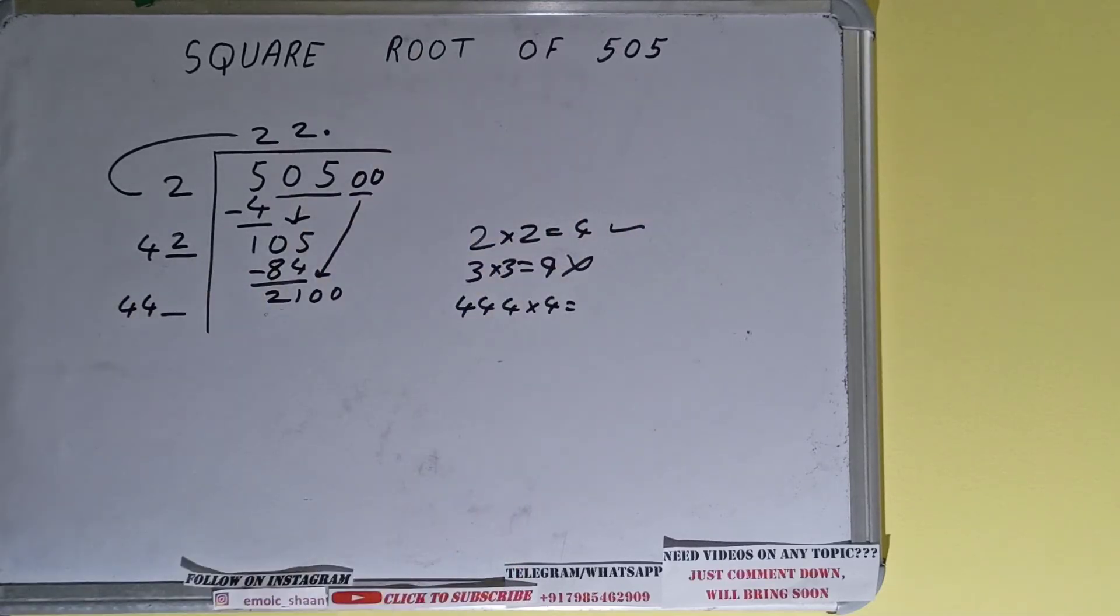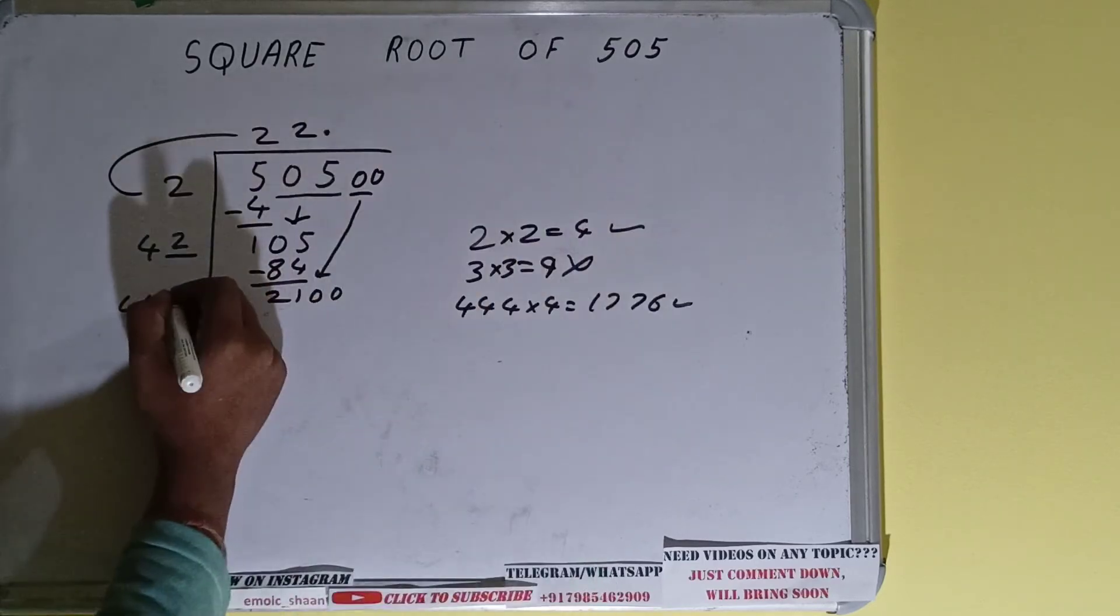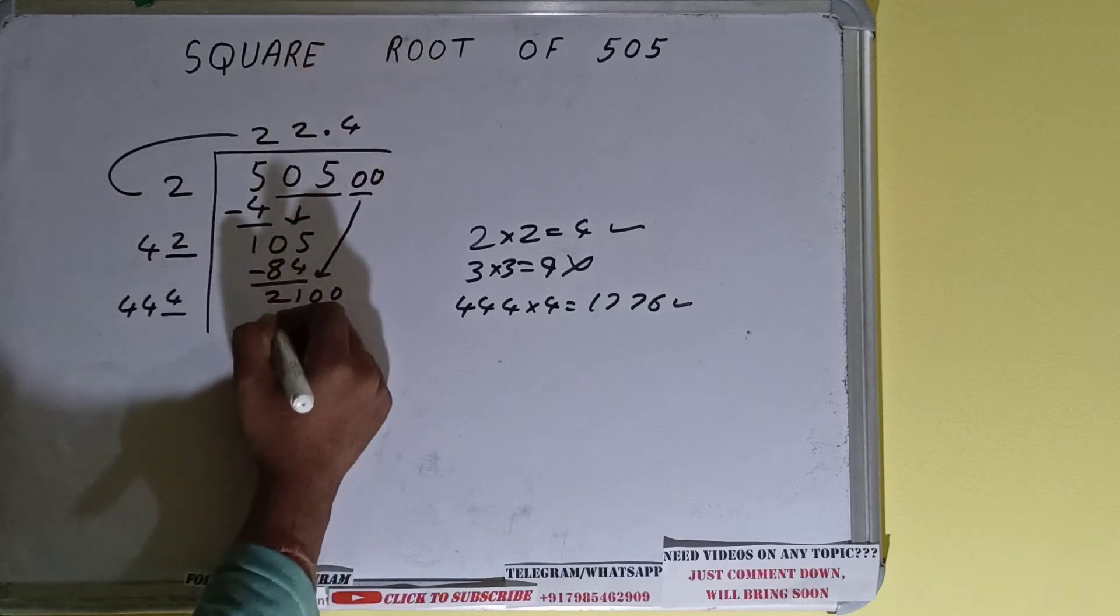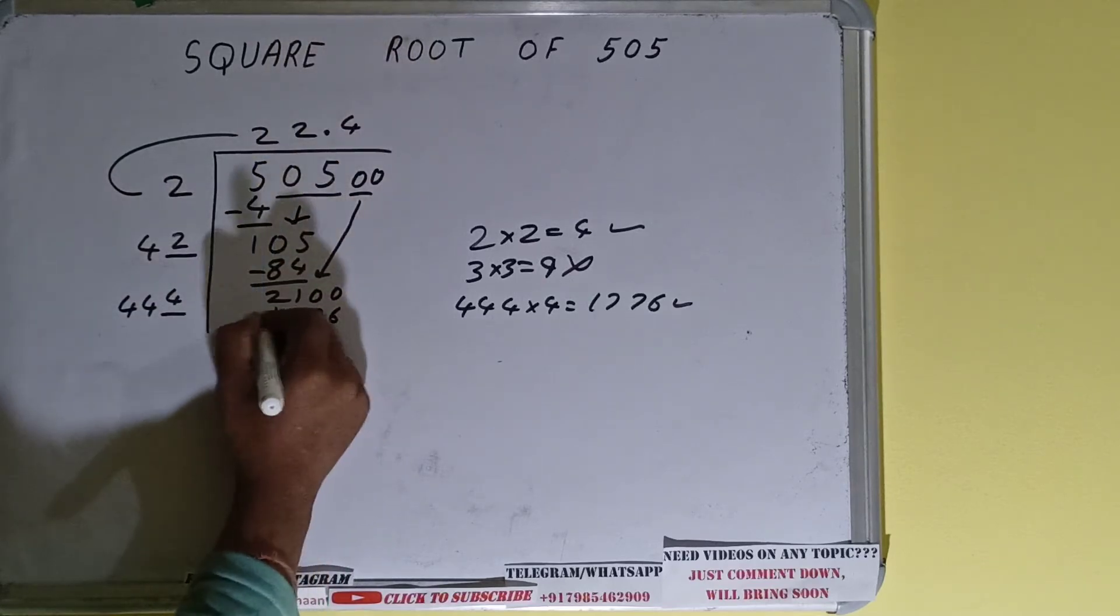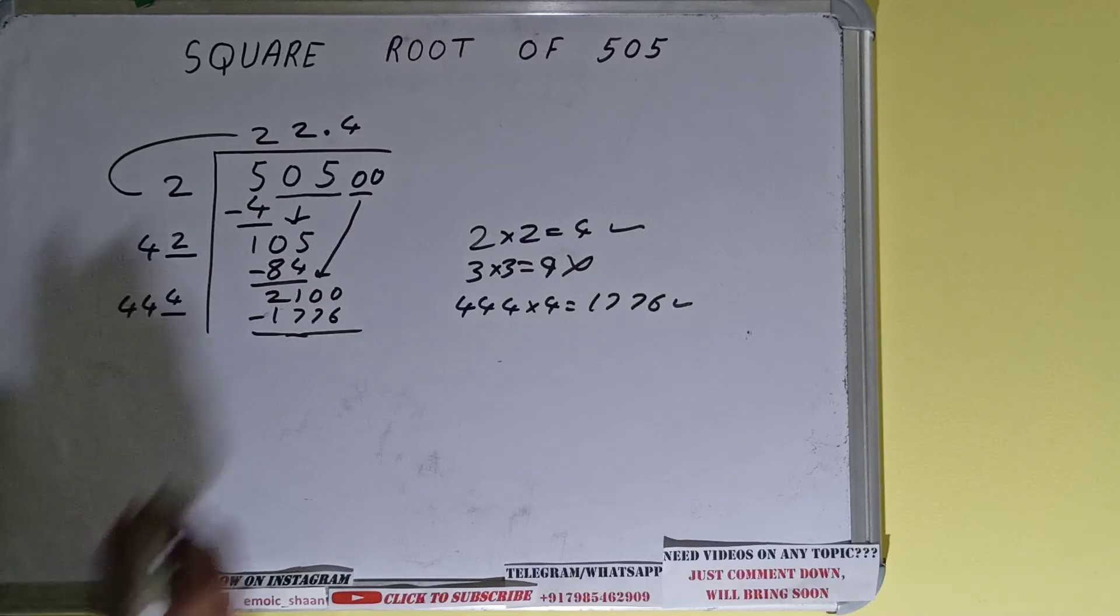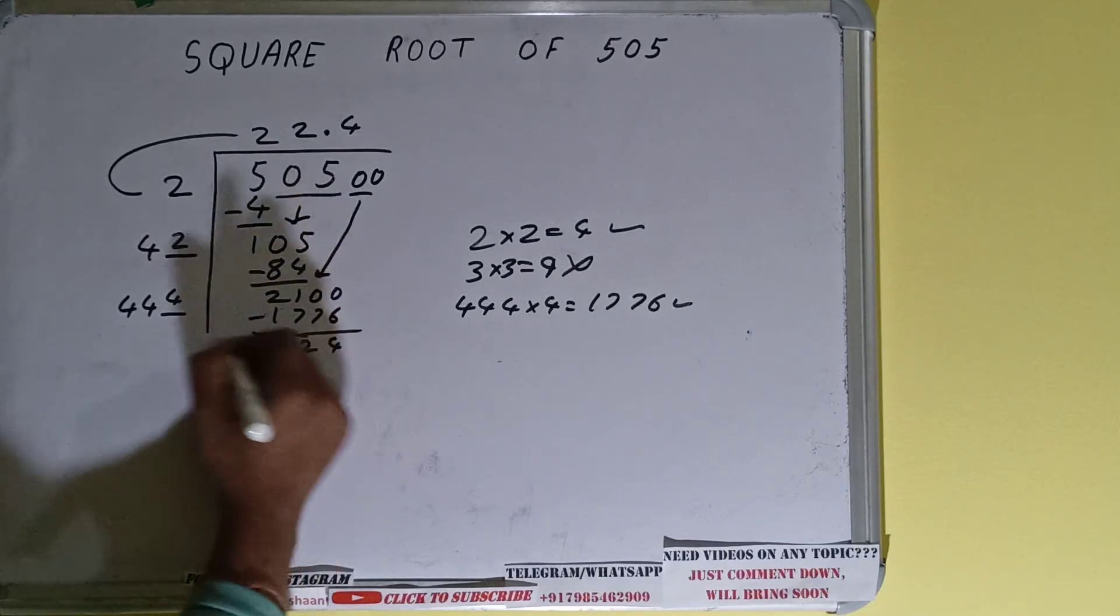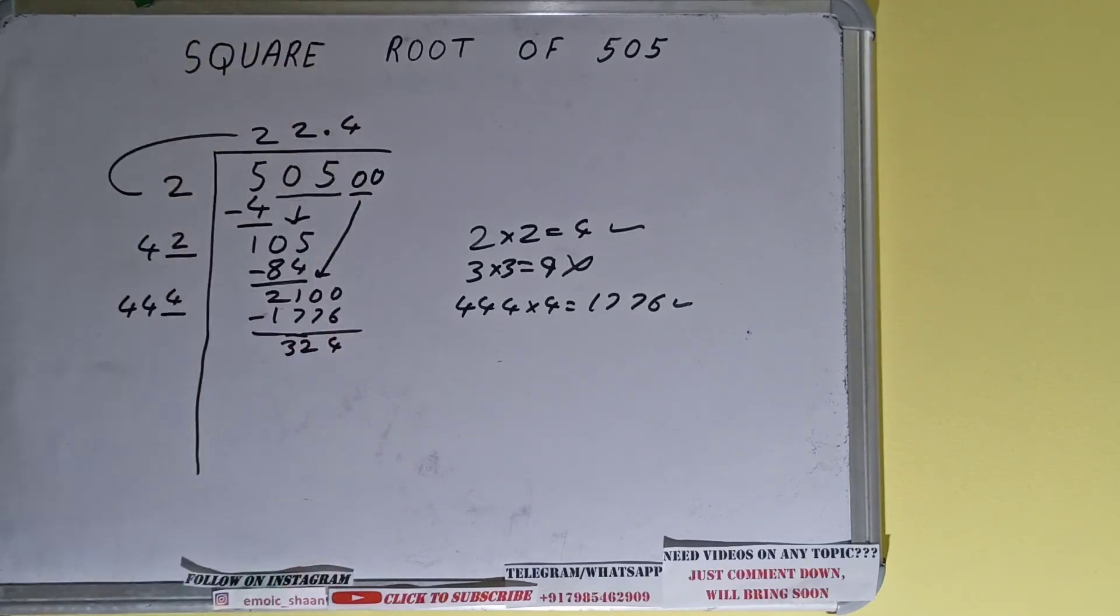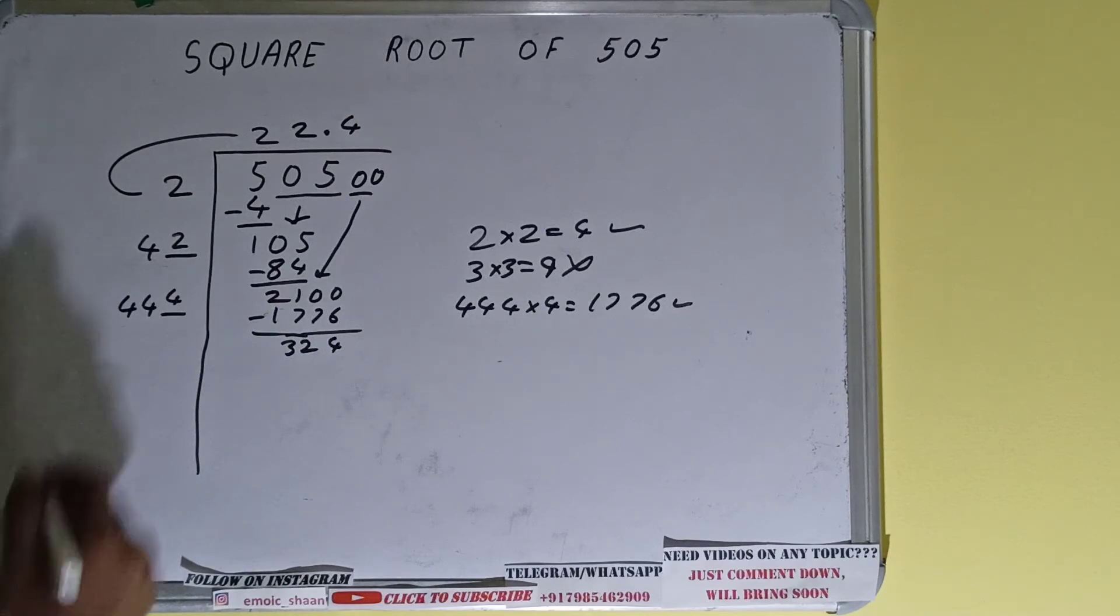So 444 into 4 will be 1776, which is good to take. So 4 here and 4 here, 1776, subtract it, and 324 will be left. Now 444 into 4, so add both. So 444 plus 4 will be 448.